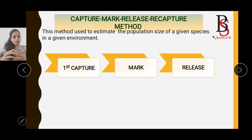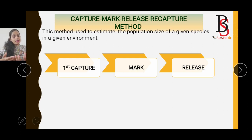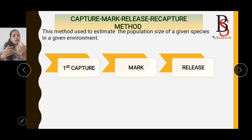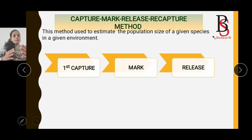The second step is Mark. After capturing the group of individuals, we mark them so we can identify them. How can we mark? If the individuals are large mammals, we can use ear tags. For small mammals, leg rings and bands are used. Insects can be marked using different paints.